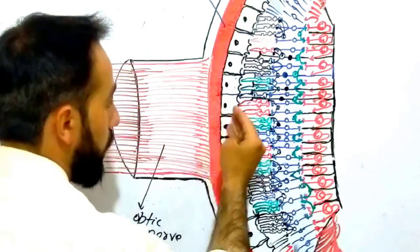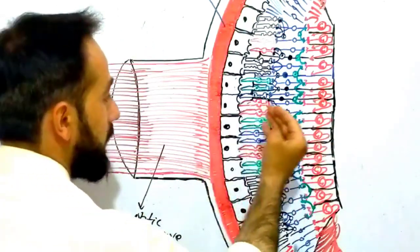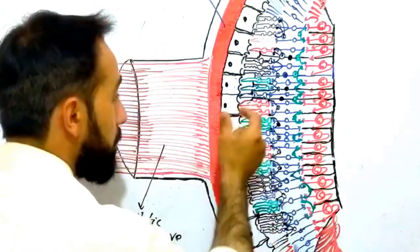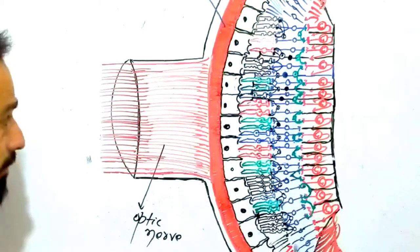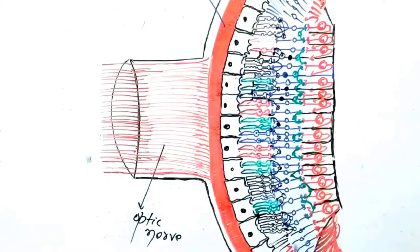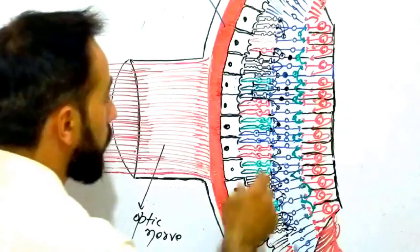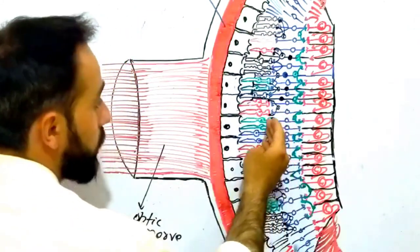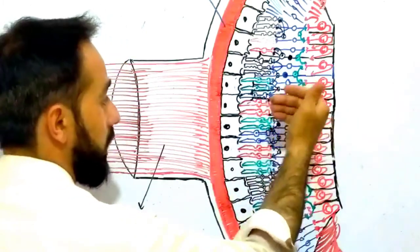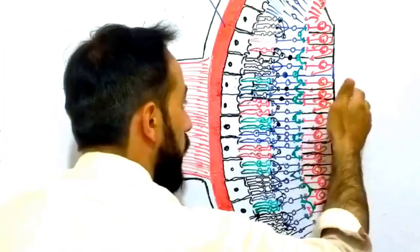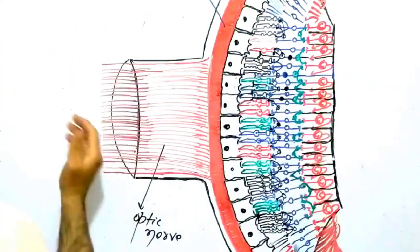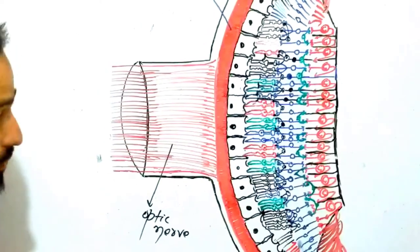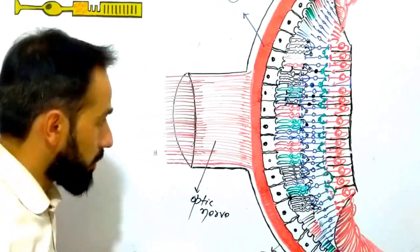Internal to the retinal pigment epithelium, you can see there are the receptor cells of the retina — the photoreceptor cells — and those are called the rods and cones. Next to rods and cones there are the bipolar cells, and next to bipolar cells there are the ganglion cells. From those ganglion cells, fibers come out through the optic disc and carry the image to the nervous system.